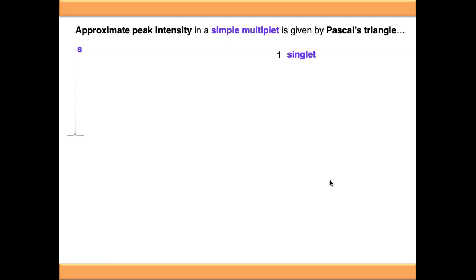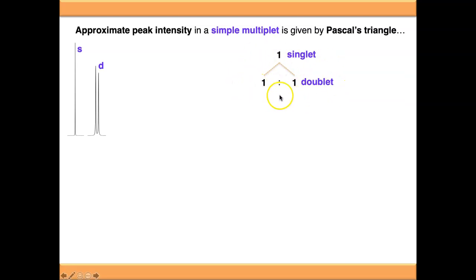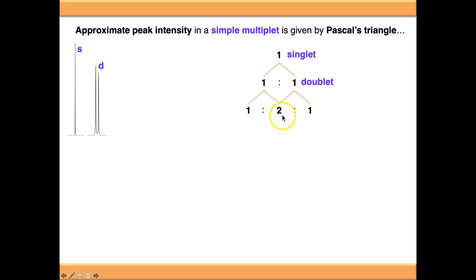Pascal's triangle works by taking the original signal — denoted as a singlet — and splitting it additively. We take a 1 and split it into two 1s below, giving us the signal intensity ratio for the next splitting: a doublet is 1:1. Doing this again, the values meet in the middle — taking each 1 and spreading it to adjacent positions, the two middle 1s add to become a 2, giving us a 1:2:1 triplet, which is reflected in the signal intensity.